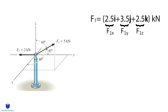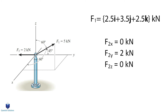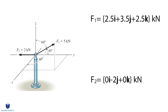Let's look at force F2. Force F2 doesn't have an x component or a z component because it lies on the y-axis. In fact, you can see that it lies on the negative y-axis. When we write each force, we can simply write the x component and the z component to be 0. The y component is 2 kN. However, note that it lies on the negative direction. In Cartesian vector notation, we can write it as 0i negative 2j plus 0k.